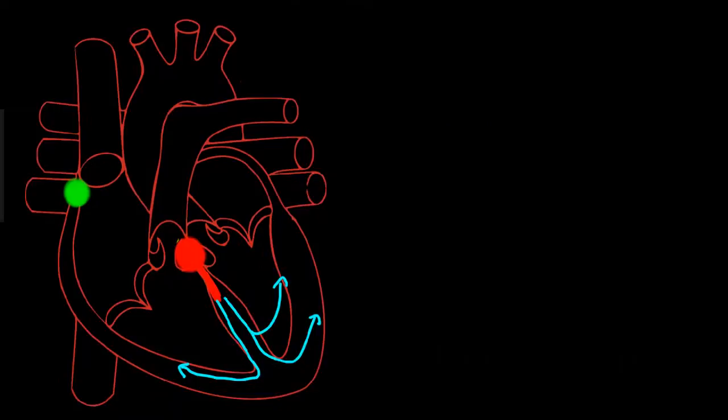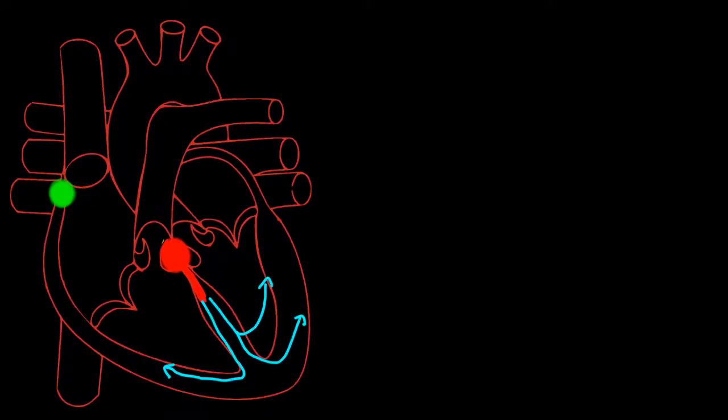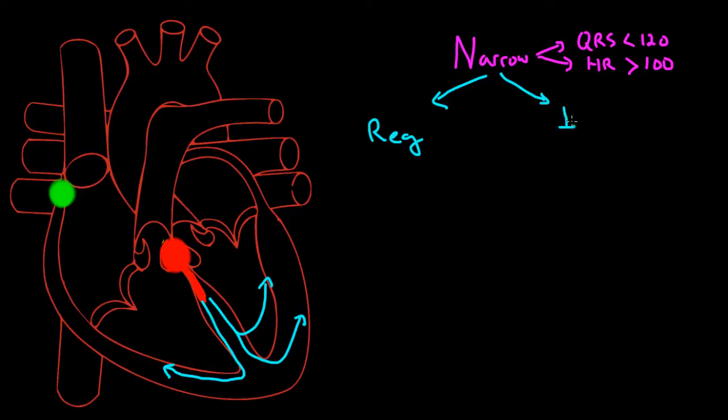That's all of the EKGs for part 1 of the talk, but let's review what we talked about. If you have a narrow complex tachycardia, that means that the QRS is less than 120 milliseconds long, or three small boxes, and the heart rate is greater than 100 beats per minute. The first thing we have to ask ourselves is, is the rhythm regular or irregular?